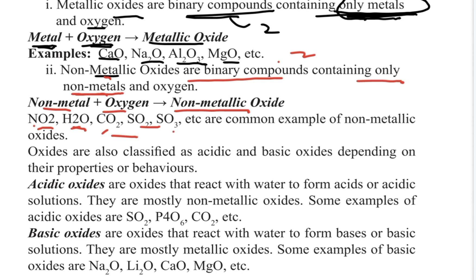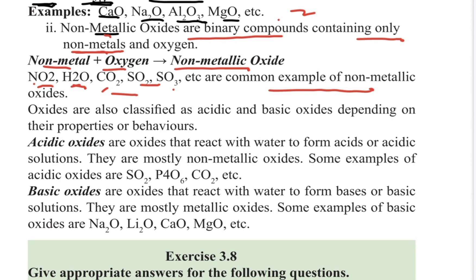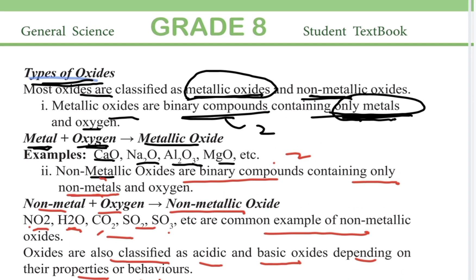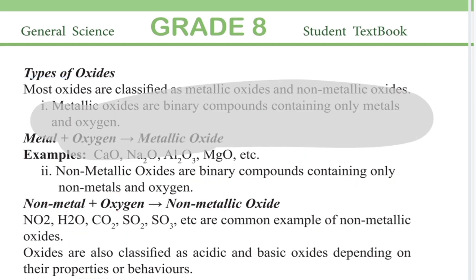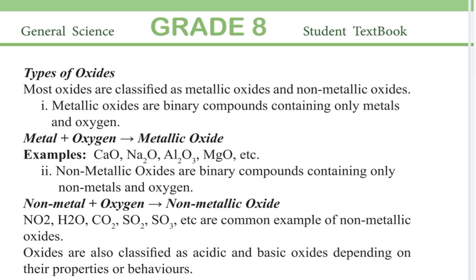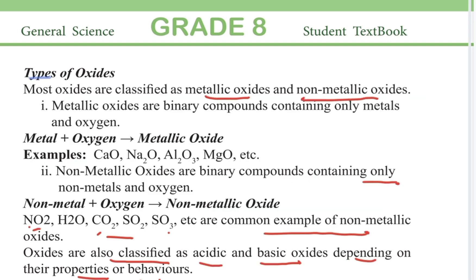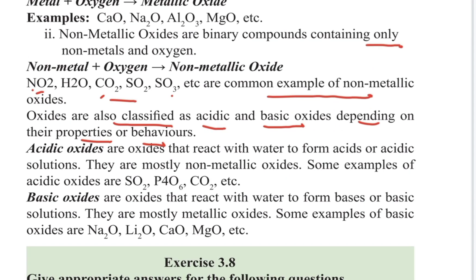On the other hand, oxide is also classified as acidic and basic oxide depending on their proportion or behaviour. There are three different oxide species: acidic oxide and basic oxide. If the element is a metal, it will produce a basic oxide.